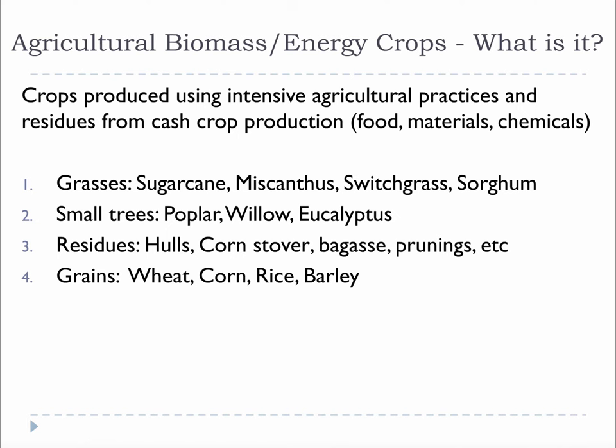Now we're going to discuss agricultural biomass. There are four major categories: grasses, small trees, agricultural residues, and grains. Pretty much any biomass that can be grown in a field is considered agricultural. This is its own category because it is often quite mechanically and chemically different than forest biomass, and it is produced from man-made ecosystems using water and arable land.